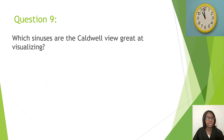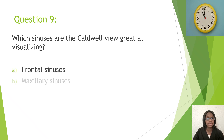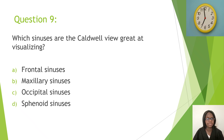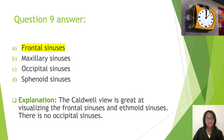Question nine: Which sinuses are the Caldwell view great at visualizing? A, frontal sinuses; B, maxillary sinuses; C, occipital sinuses; D, sphenoid sinuses. The correct answer is A, frontal sinuses. The Caldwell view is great at visualizing the frontal sinuses and ethmoid sinuses. Note: there are no occipital sinuses.